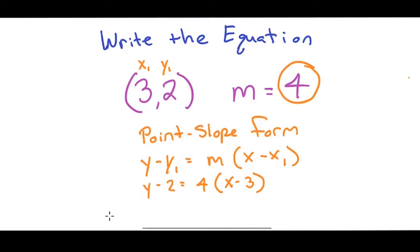I'll do the distributive property: 4 times X and 4 times negative 3. So Y minus 2 equals 4X minus 12. I will add 2, so now my answer is Y equals